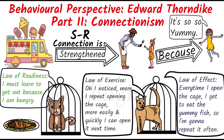The more the experiment was repeated, the more efficiently and quickly the cat was able to produce the desired response. This proves his law of exercise, which states that the connection between stimulus and response is strengthened with practice, and weakened when practice is discontinued.